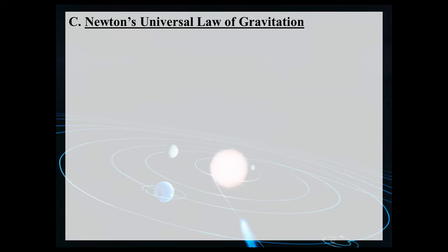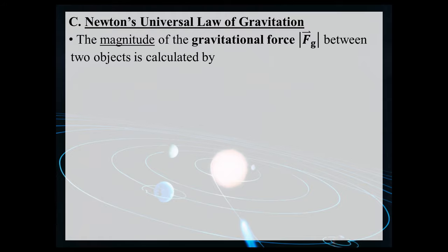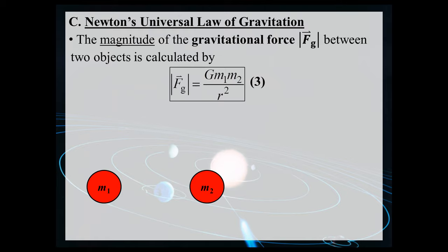Newton's universal law of gravitation enables us to calculate this force. You might be wondering: if there's a force between me and all objects in my room, why aren't those objects flying towards me? We can explain this by looking at Newton's universal law of gravitation. The law states: the magnitude of the gravitational force Fg between two objects — say M1 and M2 — is calculated as Fg equals G times M1 times M2 divided by R squared.